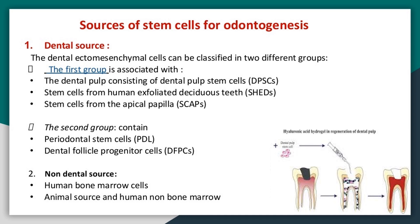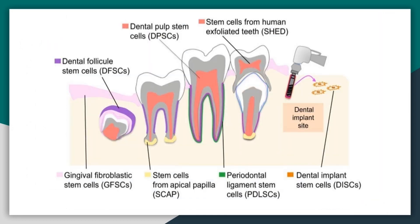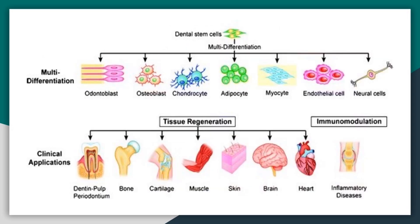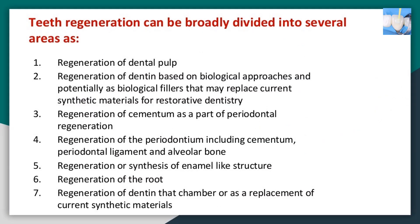Sources of dental stem cells: the dental ectomesenchymal cells can be classified into two groups. The first group is associated with the dental pulp, consisting of dental pulp stem cells (DPSCs), stem cells from human exfoliated deciduous teeth (SHEDs), and stem cells from the apical papilla (SCAPs). The second group contains periodontal stem cells (PDL), dental follicle progenitor cells (DFPCs). Non-dental sources include human bone marrow cells and human non-bone marrow sources.